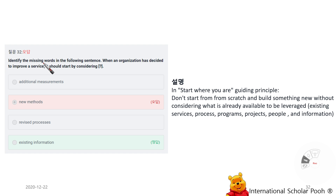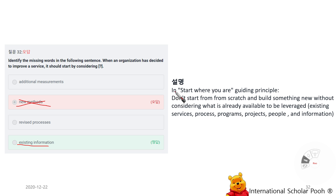Identify the missing word in the following sentence: 'When the organization has decided to improve the service, it should start by considering existing information.' In the Start Where You Are guiding principle, don't start from scratch and build something new without considering what is already available. Leverage existing services, processes, programs, projects, people, and information.